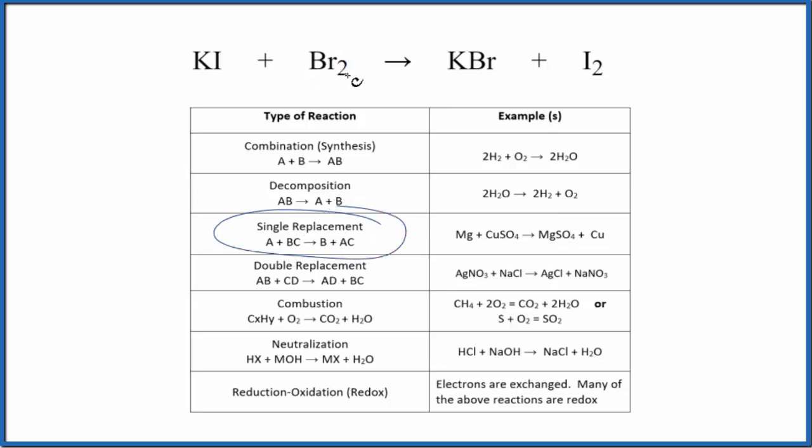So the bromine that comes in pushes out the iodine. So now the iodine, it's all by itself. It's been replaced by the bromine. The bromine and the potassium together, we get potassium bromide. So that would be a single displacement reaction.